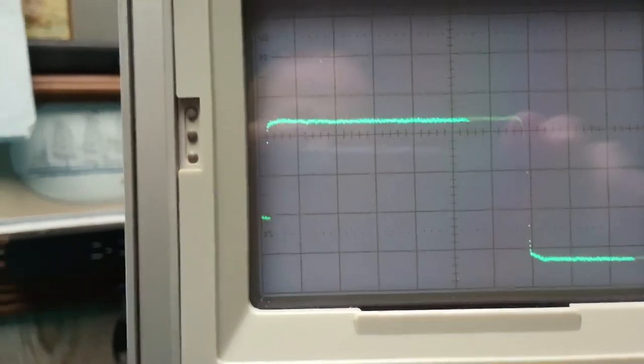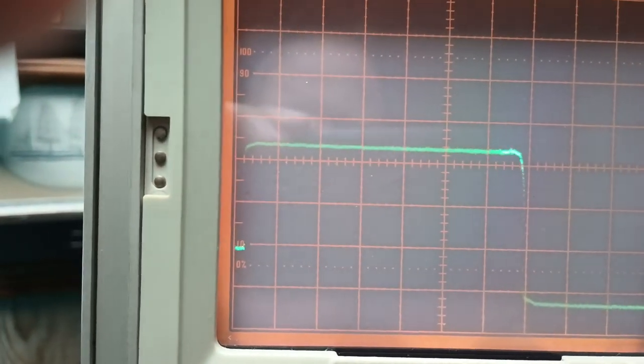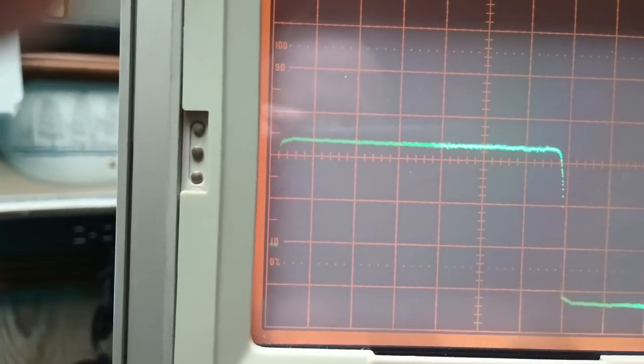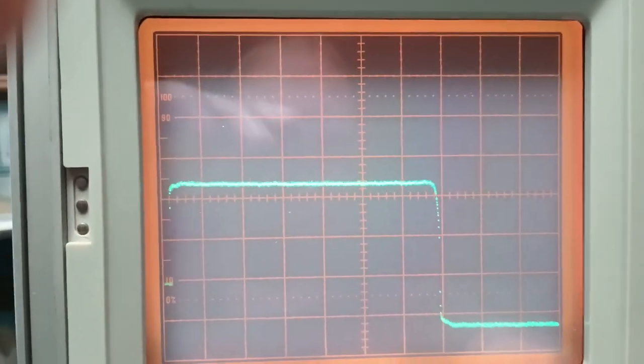But here it is with proper dummy load. And we see the incident pulse is one of two major divisions and one minor. That's 10, 20, 30, 40, 50. That suggests 50 ohms.